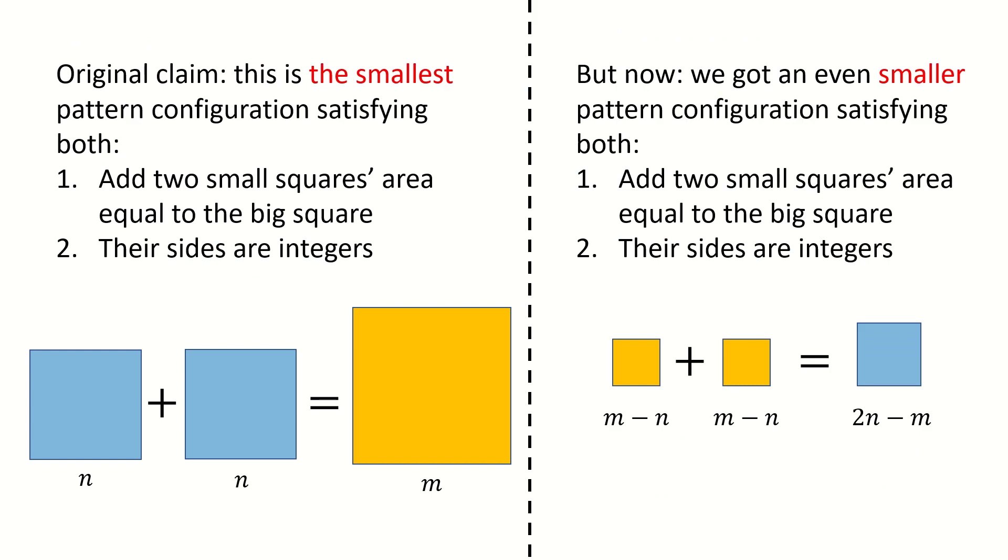Finally, let's see where the contradiction comes from. So for the left panel, we can see the original claim is this is the smallest pattern configuration satisfying both conditions.